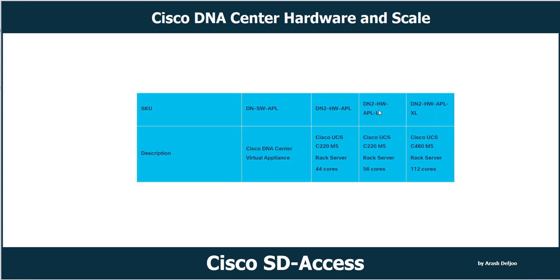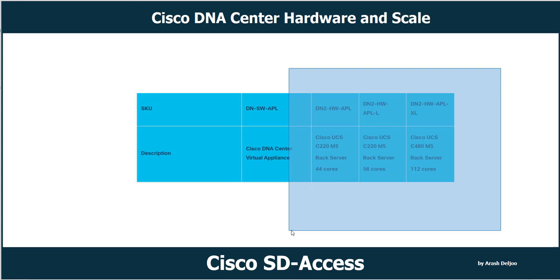Both the entry level and mid-size are implemented on the Cisco UCS C220 M5, but with different numbers of cores: 44 cores for entry size and 56 cores for mid-size. For the large version, it is implemented on the Cisco UCS C480 M5, which has 112 cores.